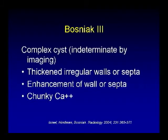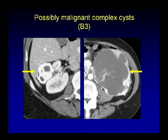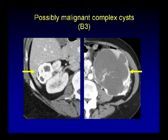Bosniak 3 cysts are complex cysts that are indeterminate by imaging, so they have features with thickened irregular wall septa, enhancement of the wall septa, and chunky calcifications. Here you see two examples: on your left a cystic lesion with irregular chunky calcification, and on your right a large cystic mass with irregular enhancement of the wall and septum — possibly malignant complex cysts type 3, needs surgical resection.